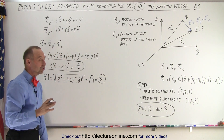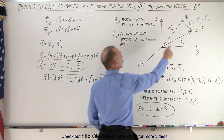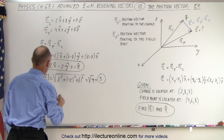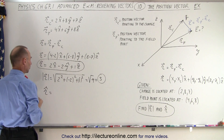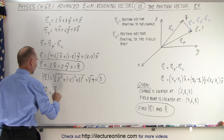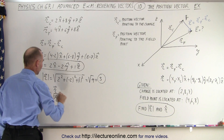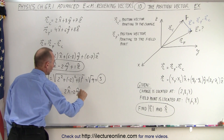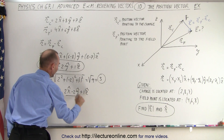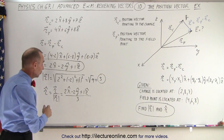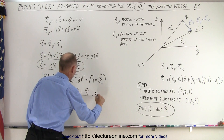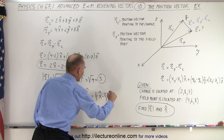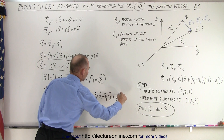That magnitude of 3 is the distance between the two points. Now we find the unit vector in that direction. The unit vector equals the position vector divided by its magnitude: (2x̂ − 2ŷ + 1ẑ) / 3. Dividing each component by 3, we get 2/3 x̂ − 2/3 ŷ + 1/3 ẑ.